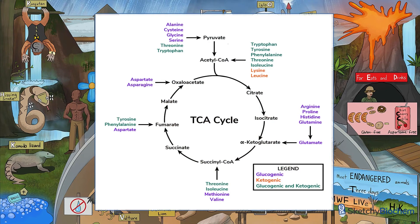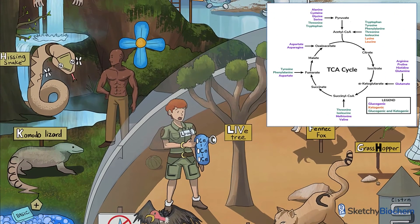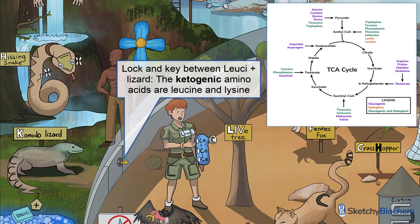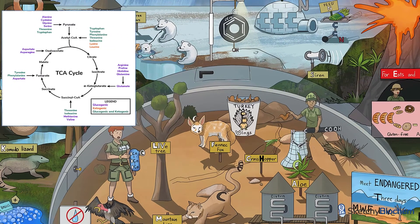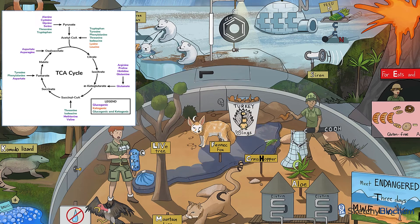Before we conclude this sketch, you should know which amino acids are glucogenic, ketogenic, or both. Glucogenic amino acids can be metabolized to glucose during gluconeogenesis. In contrast, ketogenic amino acids are degraded to acetyl-CoA. We drew a lock and key between Lucy and the lizard to help you remember that lysine and leucine are ketogenic amino acids and only ketogenic amino acids — don't be trying to convert them to glucose. Threonine, tyrosine, tryptophan, phenylalanine, and isoleucine are both glucogenic and ketogenic.